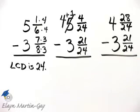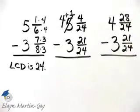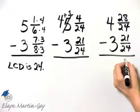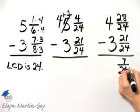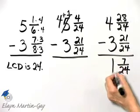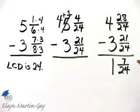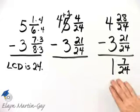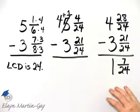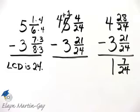And now I can actually subtract. 21 from 28 is 7 over 24, and 4 minus 3 is 1. Now this is a proper fraction, it is in simplest form, so this format is okay, and my difference is 1 and 7/24.